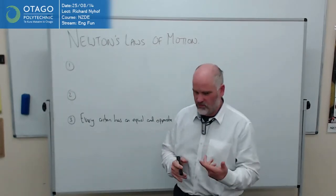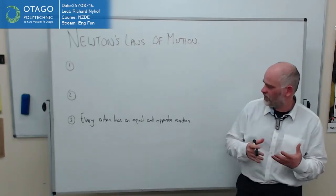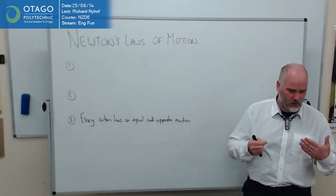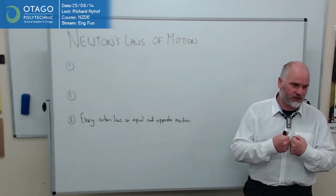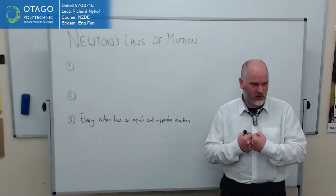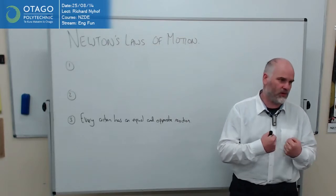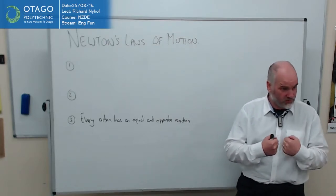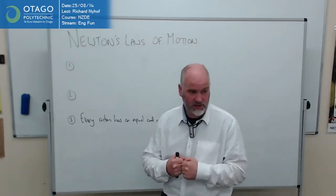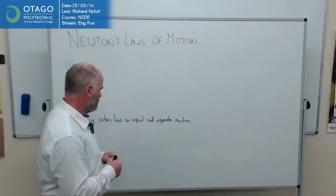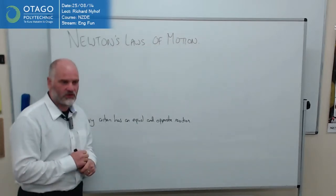What it's really saying in slightly more accurate language is any two objects in contact. If object A is pushing on object B, then object B is pushing back on object A with equal and opposite reaction. So it's to do with objects pushing against each other. That's the general expression of it. It's an equal and opposite reaction.